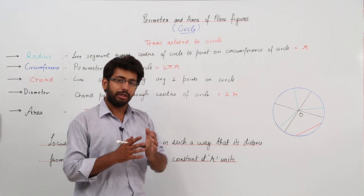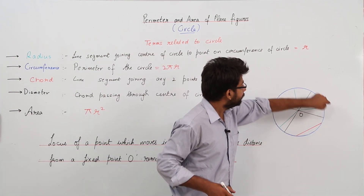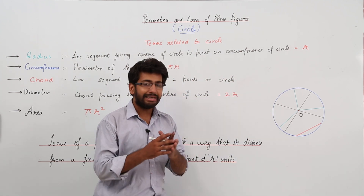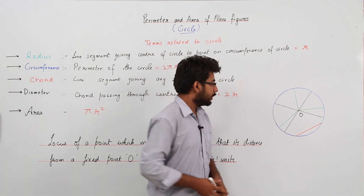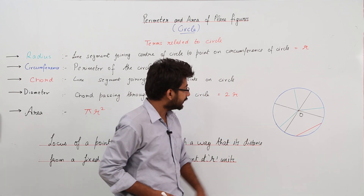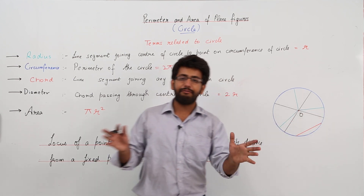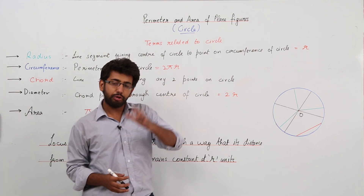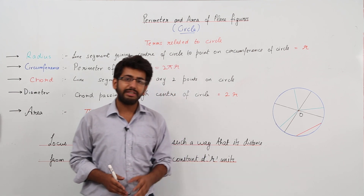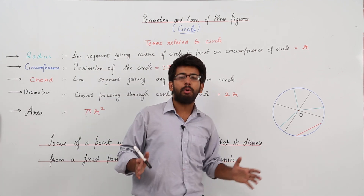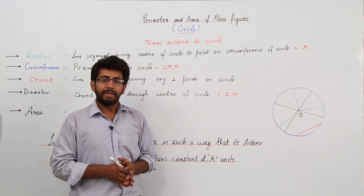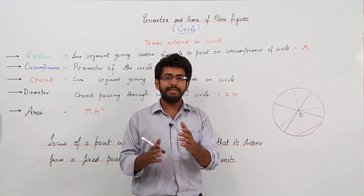Every point on this path is always at R units from the center O. If you consider this figure, you will see that every point on this blue color segment is always at a constant distance from the center — this point, this point, this point — each and every point. When you join all such points, that becomes our circle.